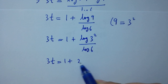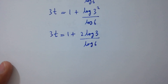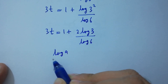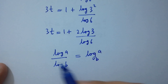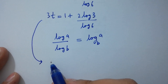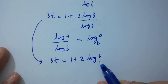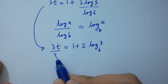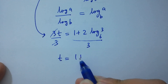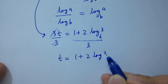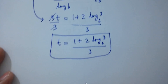This simplifies to 1 plus 2 log 3 over log 6. Using the formula log A over log B equals log A to the base B, we get 3t equals 1 plus 2 log 3 to the base 6. Dividing both sides by 3, t equals (1 plus 2 log 3 to the base 6) over 3, which is the value of t.